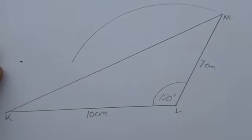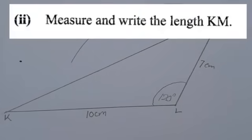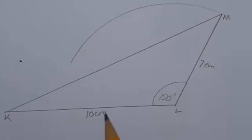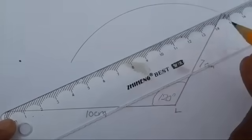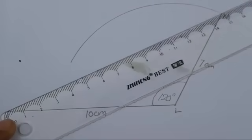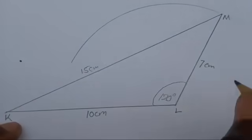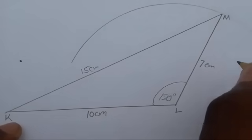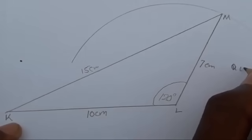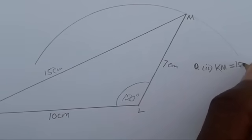If you are with me up to this point, please subscribe, comment, hit the like button and share. The next question says: measure and write the length KM. Get your ruler and take your measurements from zero — you can see that KM is 15 centimeters. Write: KM = 15 centimeters.